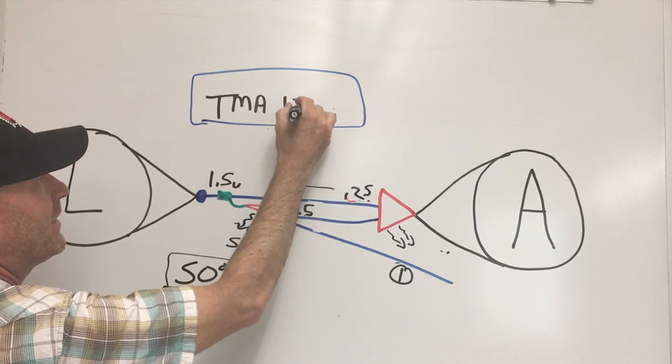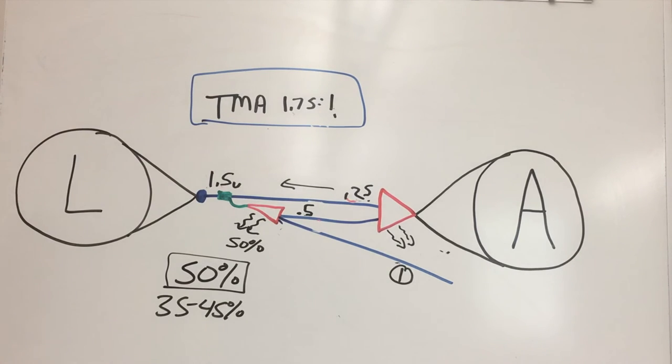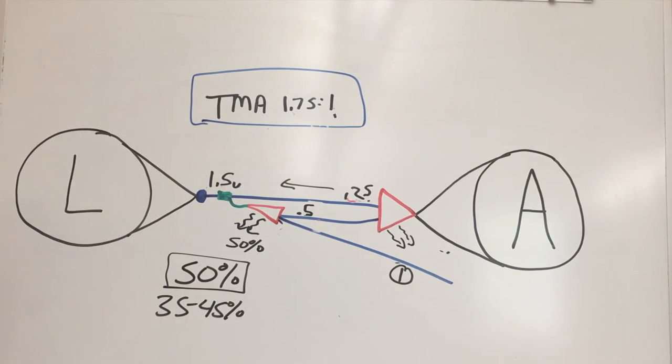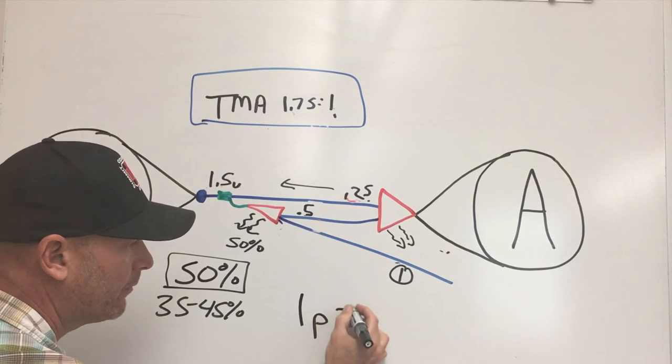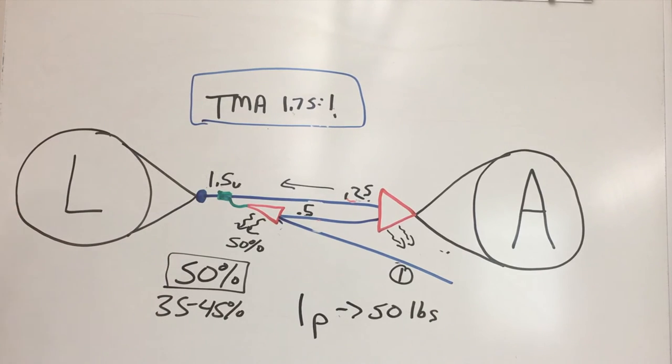That would be pretty tough. CMC Rescue has done tests with how much the average person can pull on a rope. They found out that most of their testing, one person can pull about 50 pounds comfortably, and that's just an average.